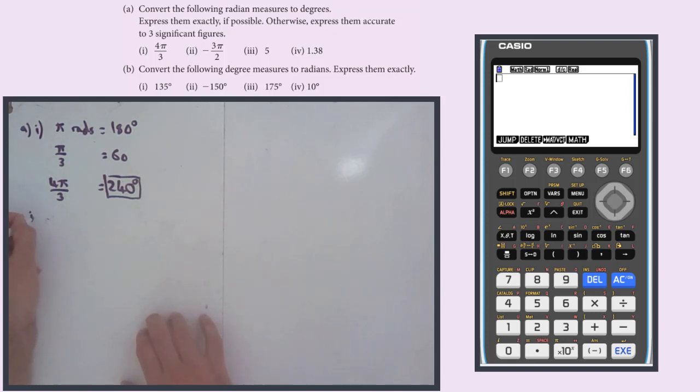Part 2, we have that minus 3π by 2. So I'm going to write π equals 180. So π by 2 is going to be 90. 3π by 2 is going to be 3 times 90, which is 270, which means that minus 3π by 2 is minus 270 degrees.